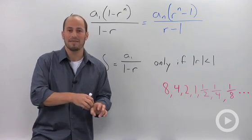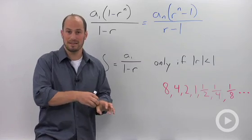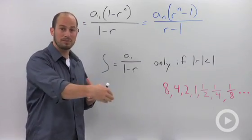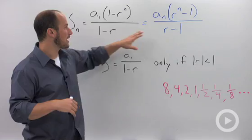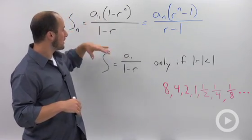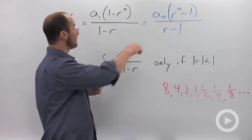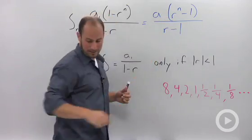So what we have is for a finite series, there's a series with a set number of terms, we have these two equations at the top of the board. And I have miswritten them. This should be a sub 1. Sorry about that.